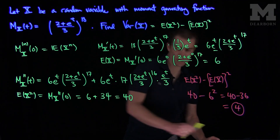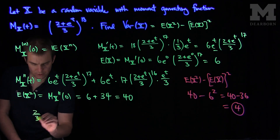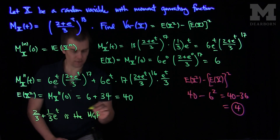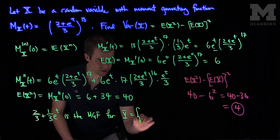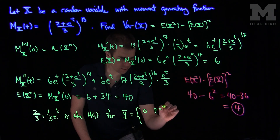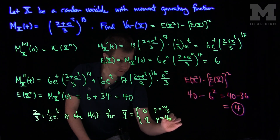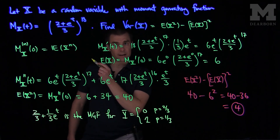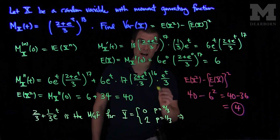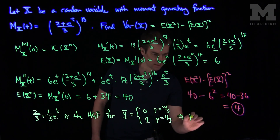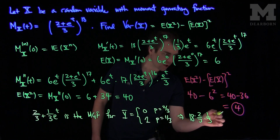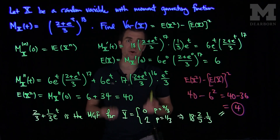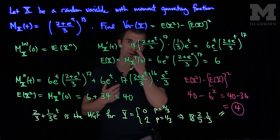Alternatively, we could have solved this problem by noting that 2 over 3 plus 1 over 3 e to the t is the moment generating function for y, which is the random variable which is 0 with probability 2 thirds and 1 with probability 1 third. So this is a Bernoulli random variable. And if I sum up 18 Bernoulli random variables, I get a binomial random variable. The variance of a binomial random variable is n times p times q, so what we have here is 18 times p times q, which also gives me 4. So we could have solved this problem quickly with the observation that this moment generating function is the moment generating function of a binomial random variable with n equals 18, p equals 1 third, and q equals 2 thirds. Thank you very much.